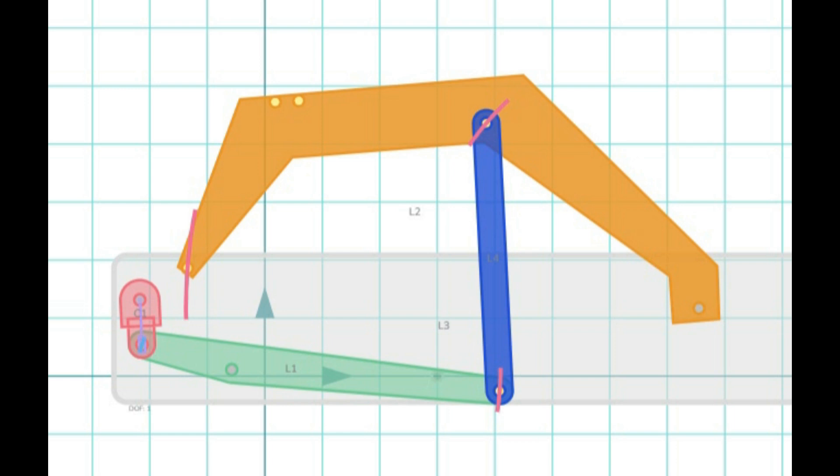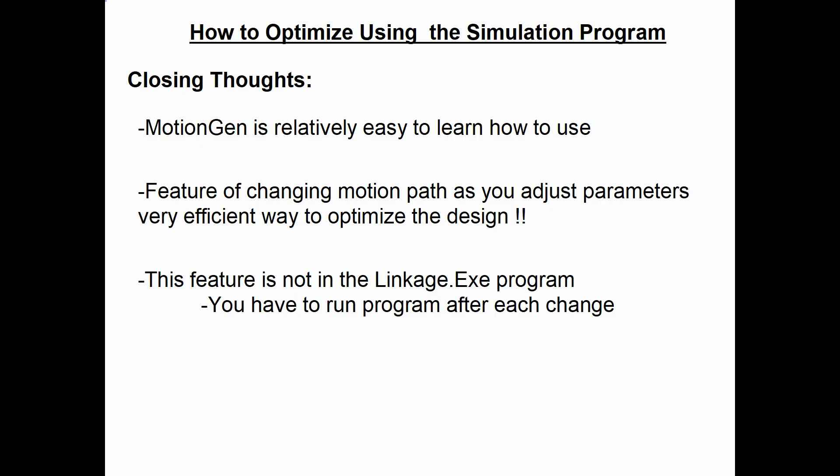MotionGen is relatively easy to learn how to use. The learning curve is not too bad, and this feature of changing the motion path as you adjust parameters is really an efficient way to optimize a design.